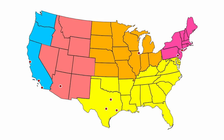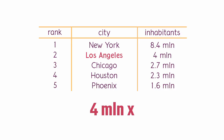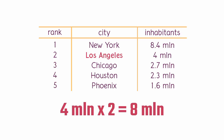Zipf's law does more or less apply to the list of largest cities in the US. New York is the largest city and has around 8.4 million inhabitants. Los Angeles is the second largest one, and if you take the population of Los Angeles and multiply it by the city's rank on the list — two — you get 8 million, which is pretty close to the number of people living in New York.